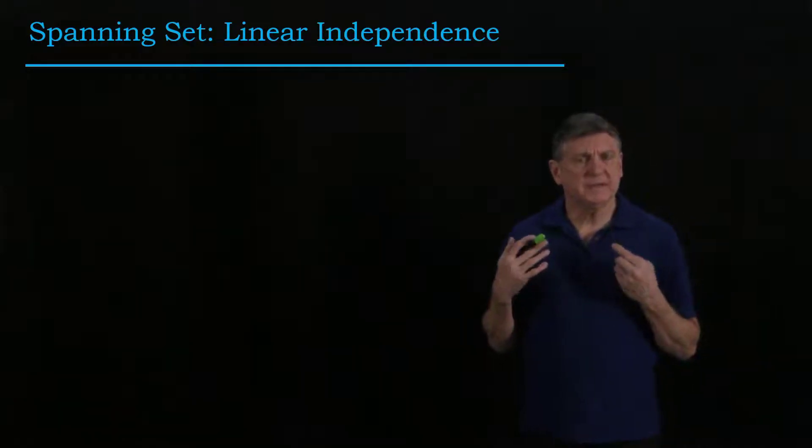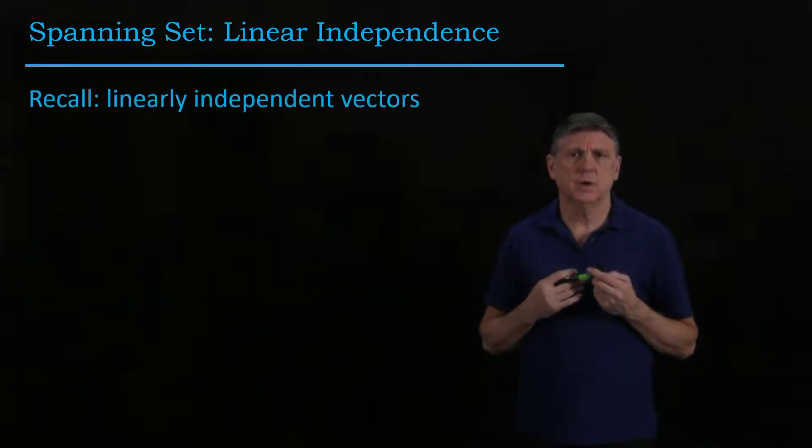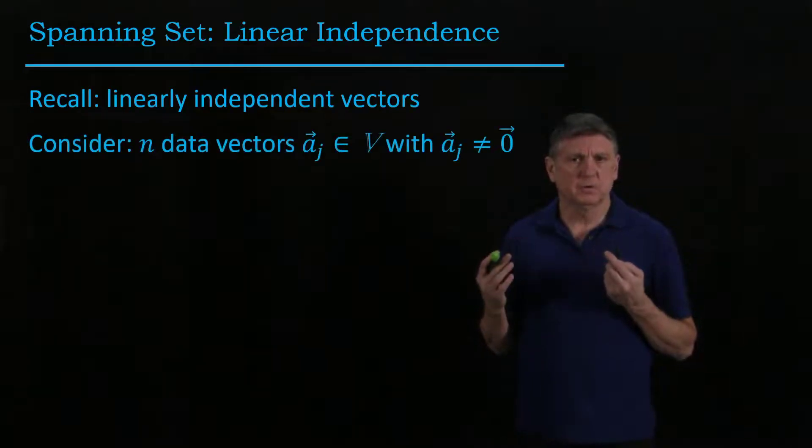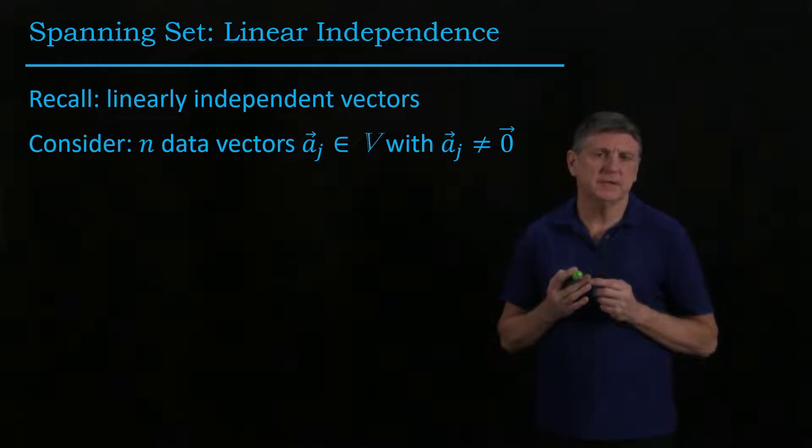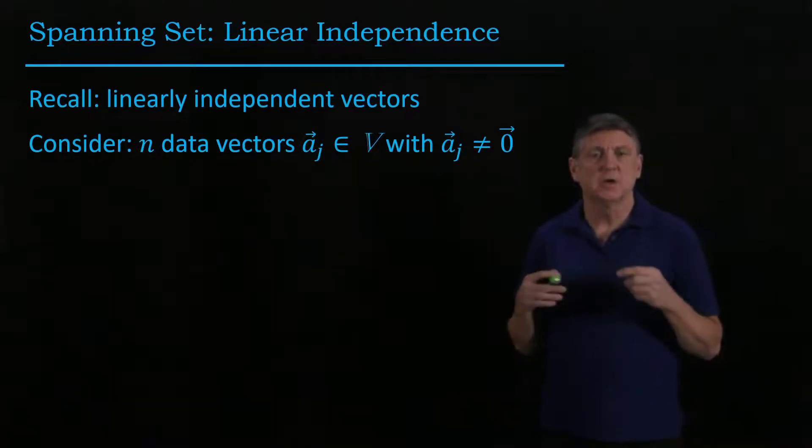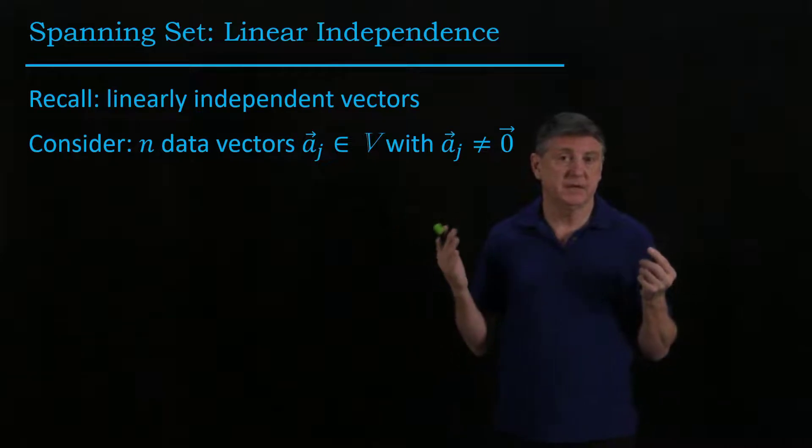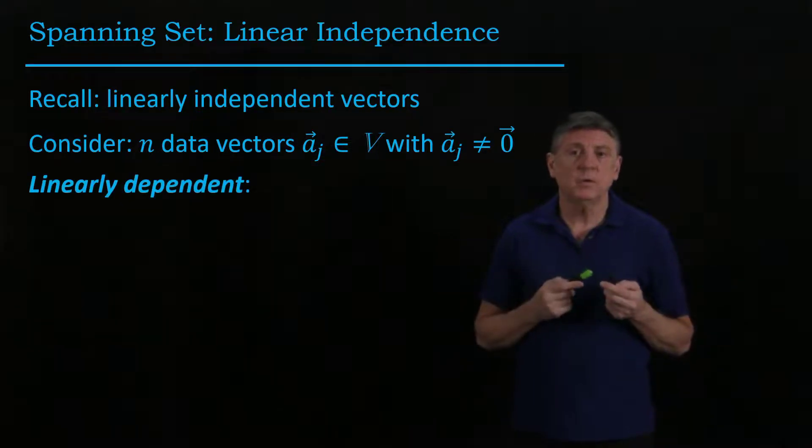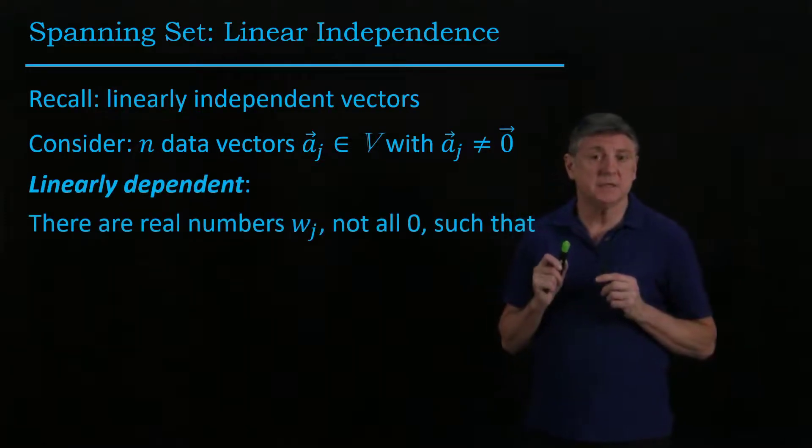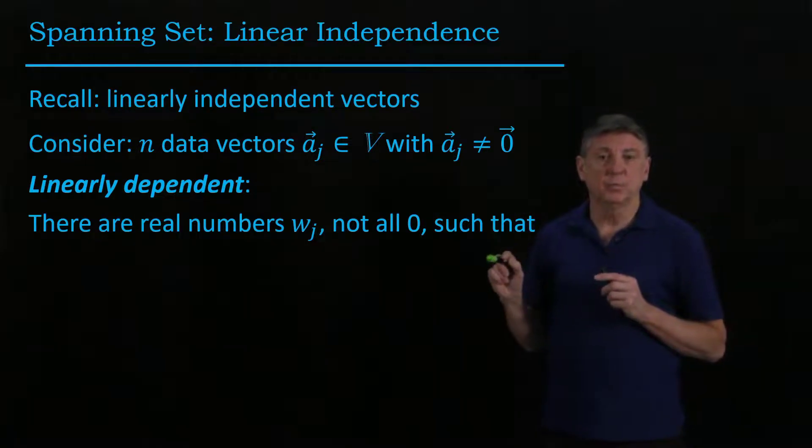What do we mean by linear independence? This definition is closely related to ideas of vector spaces. Suppose we're given n vectors ā_j, none of them zero. Linearly dependent means there are real numbers w_j, not all zero,